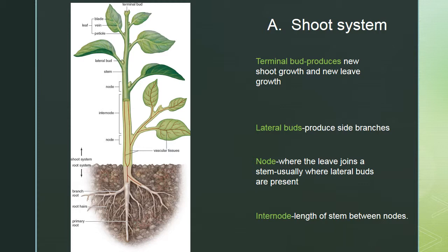The shoot system contains several buds where growth occurs. The terminal bud has been present since embryonic development, contains the shoot apical meristem, and produces new shoot growth, new leaves, and other primary growth tissues. Lateral buds produce side branches. Where a leaf joins the main stem is called a node, and the section between two nodes is an internode.